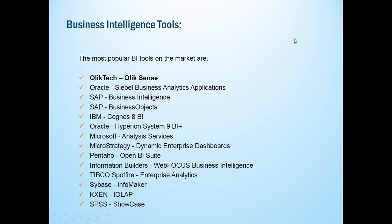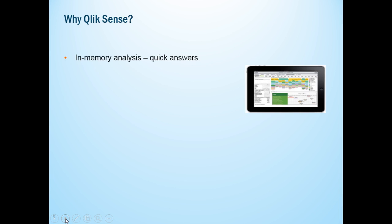There are other BI tools in the market - Cognos, SAP BI, Spotfire, MicroStrategy, MSBI - but why have we taken Qlik Sense into consideration? The unique selling point of Qlik Sense is in-memory analysis. In-memory analysis means processing is done inside a buffer, bringing data from external data sources into Qlik Sense's in-memory buffer and processing it from there.